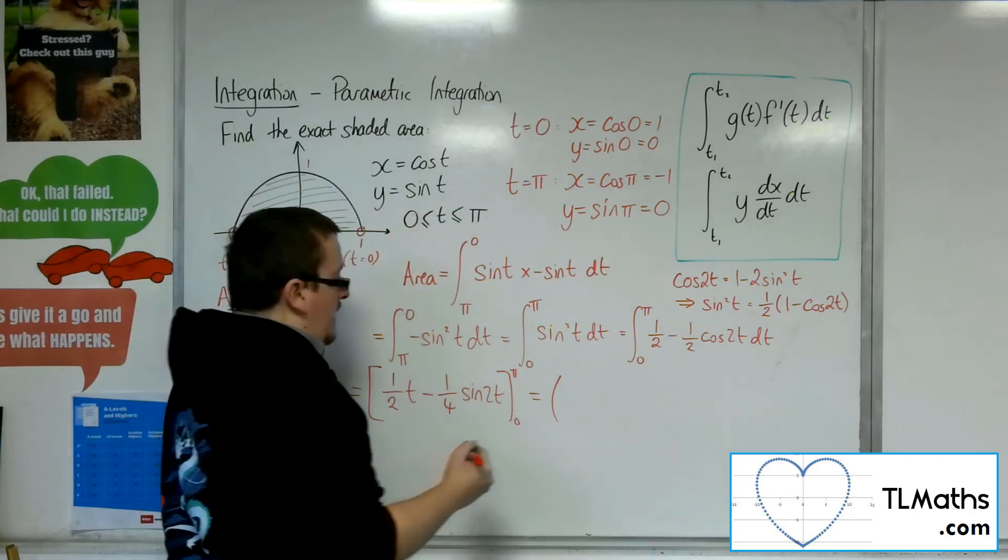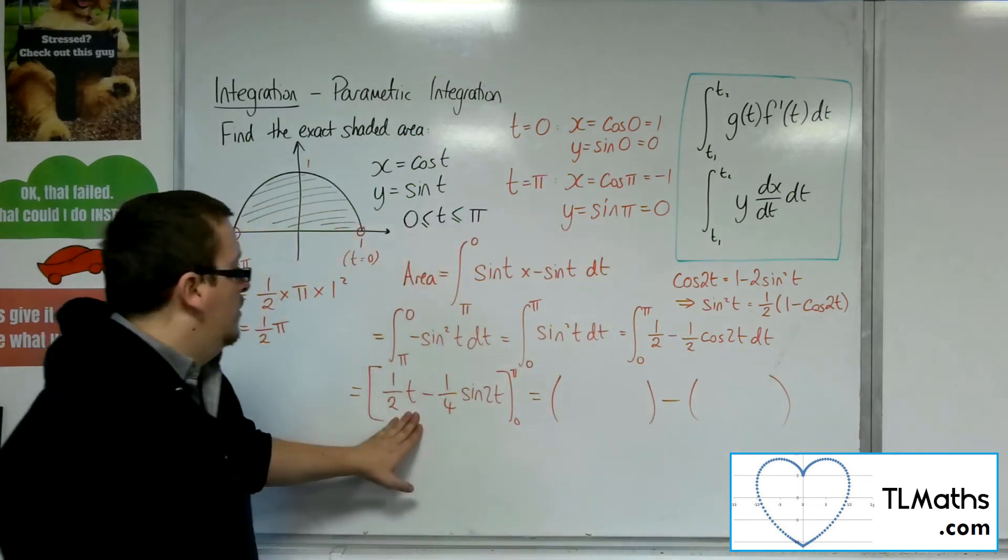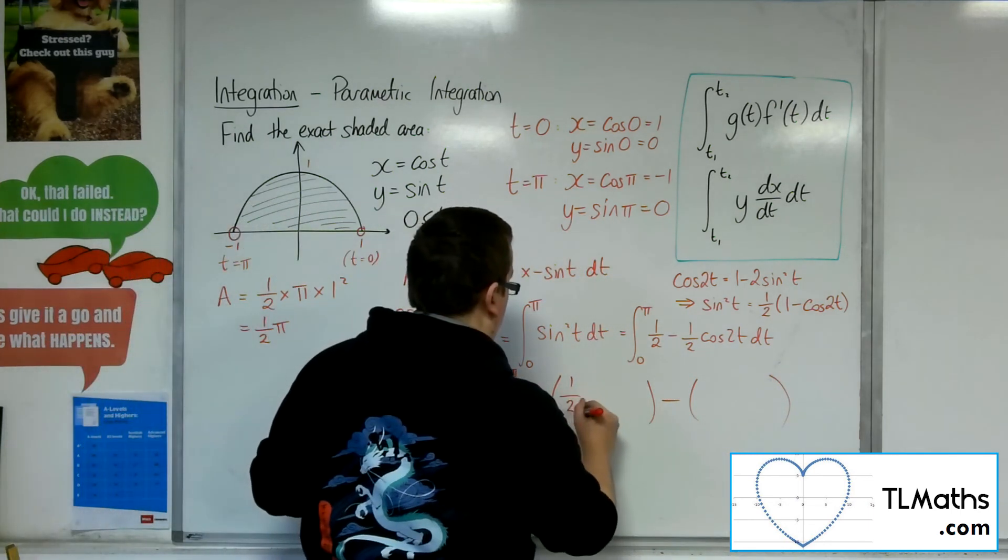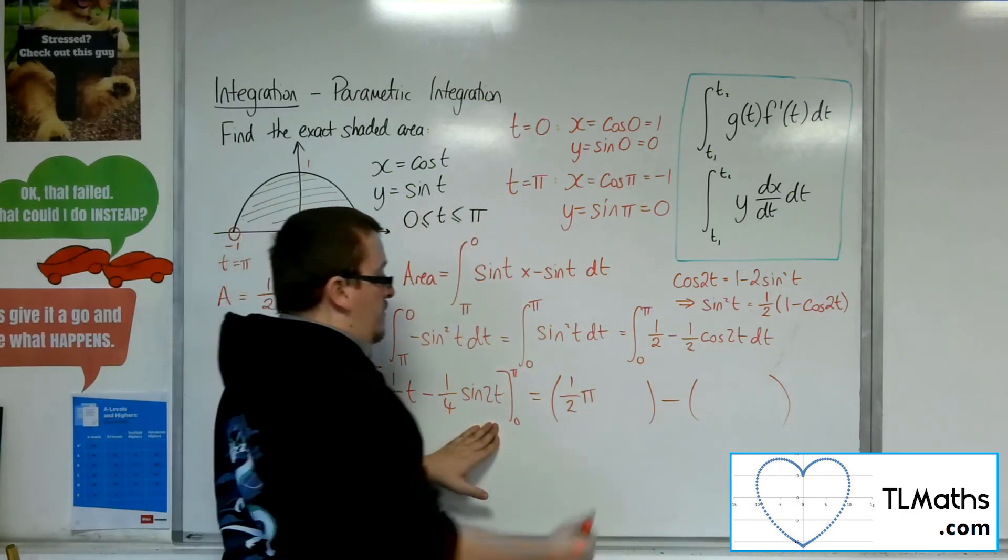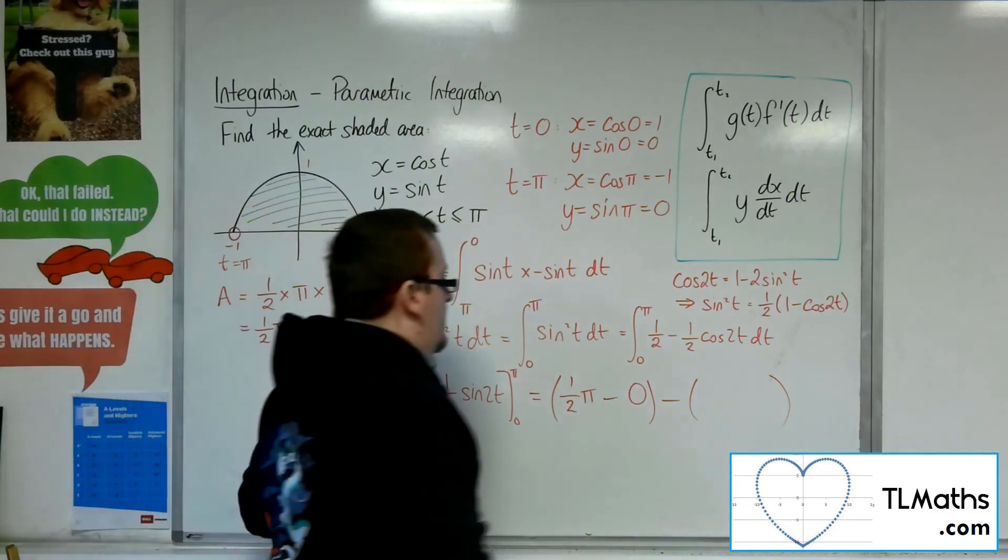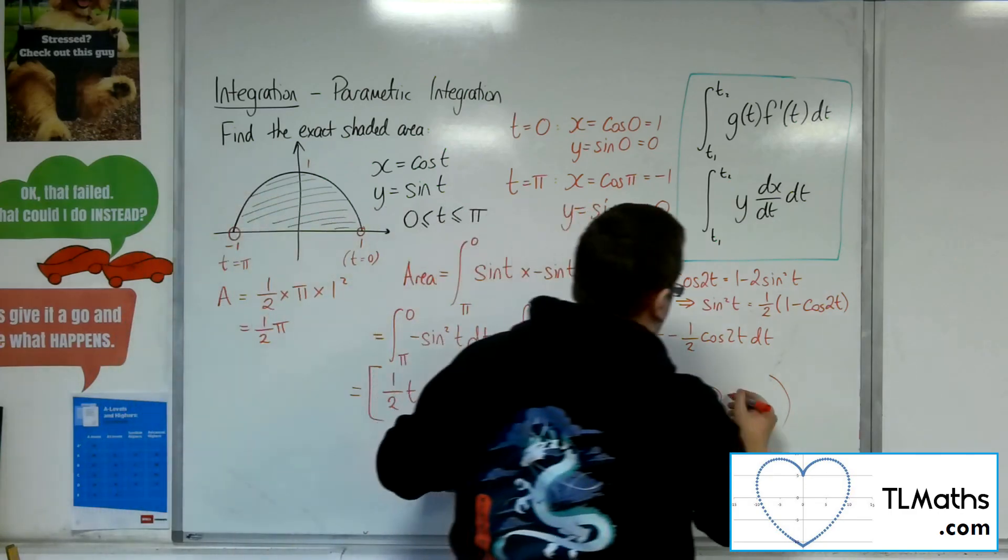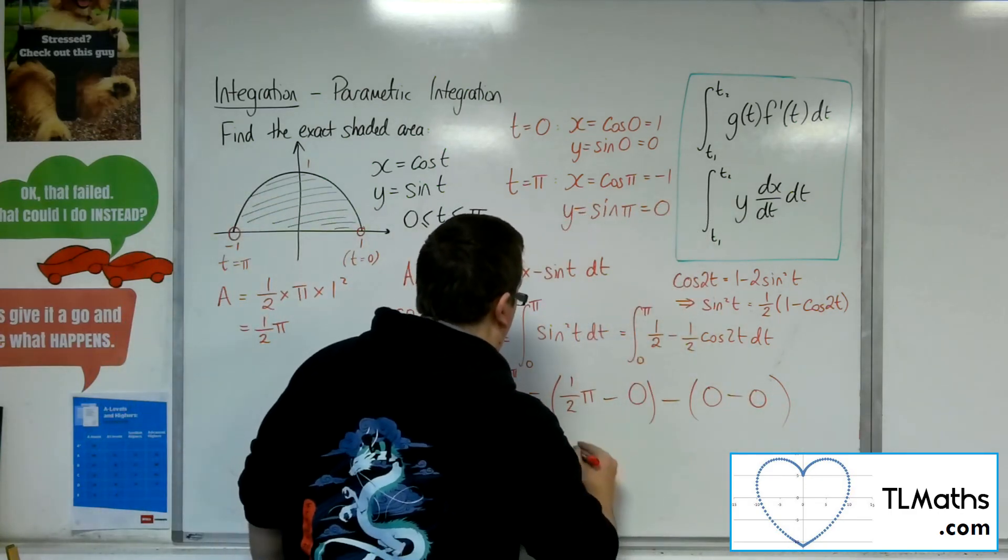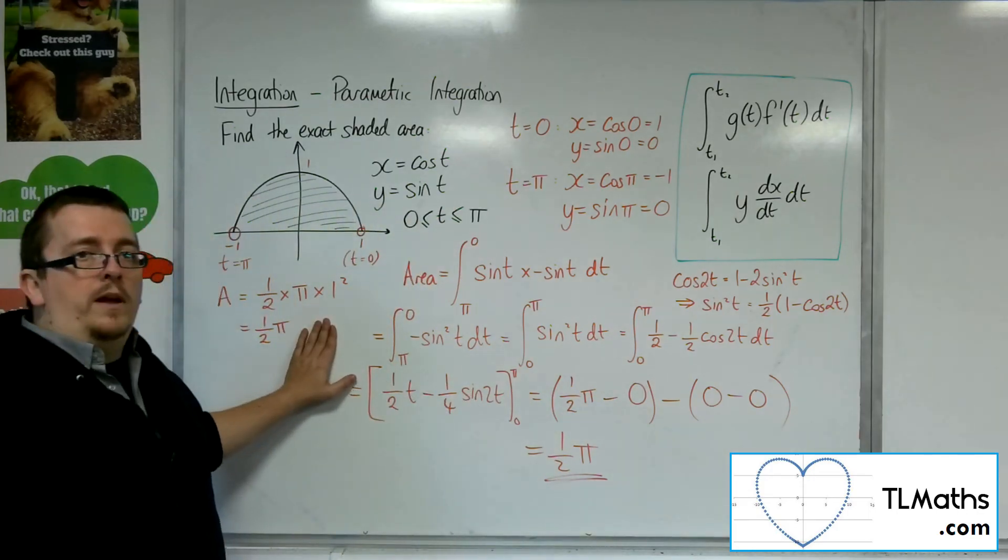Open up brackets. Now, substituting in pi, we'll get 1 half pi. Sine of 2 lots of pi is 0, so that'll be 0. Substituting 0, we'll get 0 there. Sine of 0 is 0. Leaving us with the 1 half pi. As confirmed, using pi r squared.